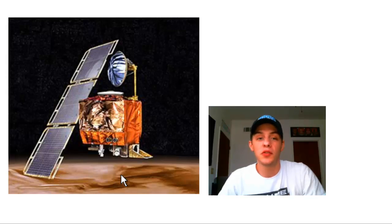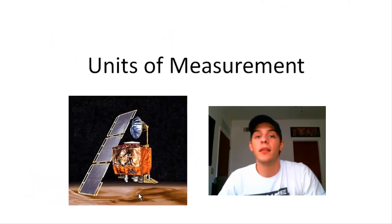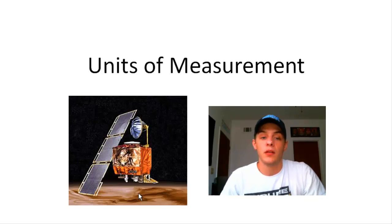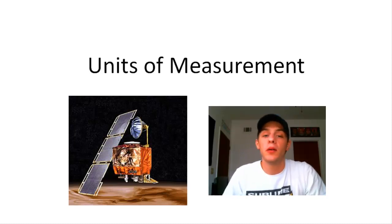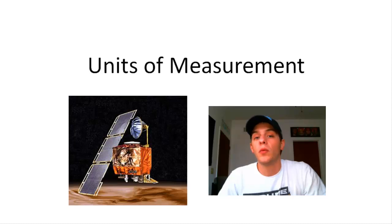So because of this seemingly trivial mistake, the $125 million that went into the Mars Climate Orbiter might as well be burnt up just like the orbiter itself. So obviously, units of measurement are very important. And it's very important that we are consistent with our units when we're doing calculations.